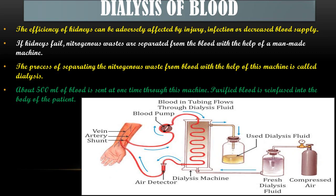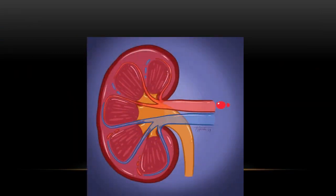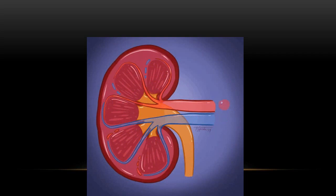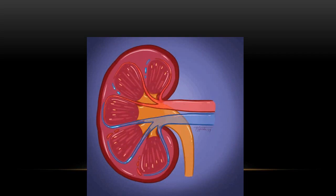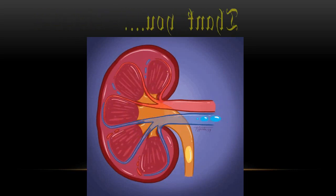That is all about this video. I hope you have understood the excretory system in human beings very well. We can continue the next part in our next session. To summarize: blood enters the kidney, filtration takes place, urine is produced, and it is transferred to the urinary bladder. Thank you!